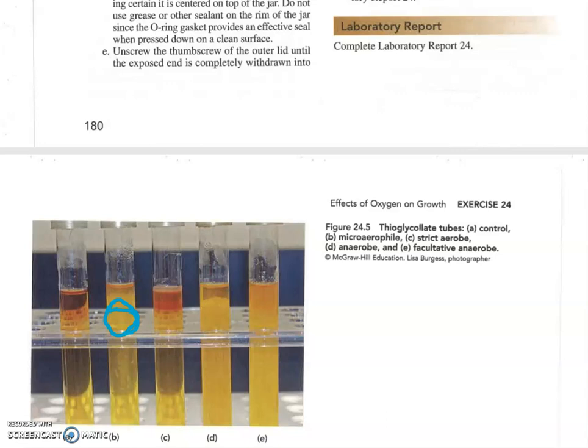Then in test tube number C, that's the typical growth that you see with a strict aerobic bacterium. It hates this medium. It really doesn't want to grow. If anything, there might be a slim layer right here on the very top, just gasping for some oxygen right there.